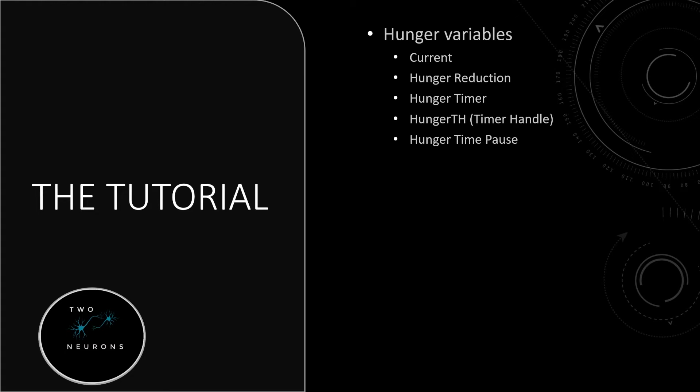It just felt weird calling it that, but it is what it is. We have our current hunger, and because it works on a zero to a hundred system, we won't have a max — those numbers will never change as our min and max values. We'll be using a timer handle to affect how the system plays out. We'll have a hunger reduction, which actually increases the amount of hunger somebody has — reducing the hunger value means making their stomach less full. We'll have a hunger timer and a variable for how often we want the timer to loop, and a variable for how long to pause the timer.